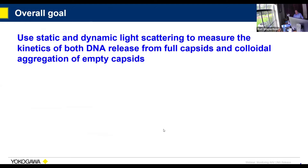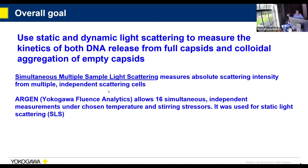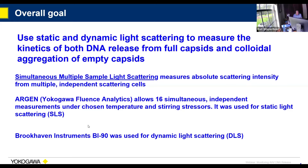Now to the focus of this talk, which is using static and dynamic light scattering to measure properties of these capsids — those that contain DNA and those that are empty. For static light scattering, we're using a method called simultaneous multiple sample light scattering, which is embodied in ARGEN from Yokogawa. It has 16 completely independent samples, so you can vary temperature, stirring, and other stressors on 16 simultaneous experiments. On the dynamic light scattering side, we use the Brookhaven Instruments BI-90.